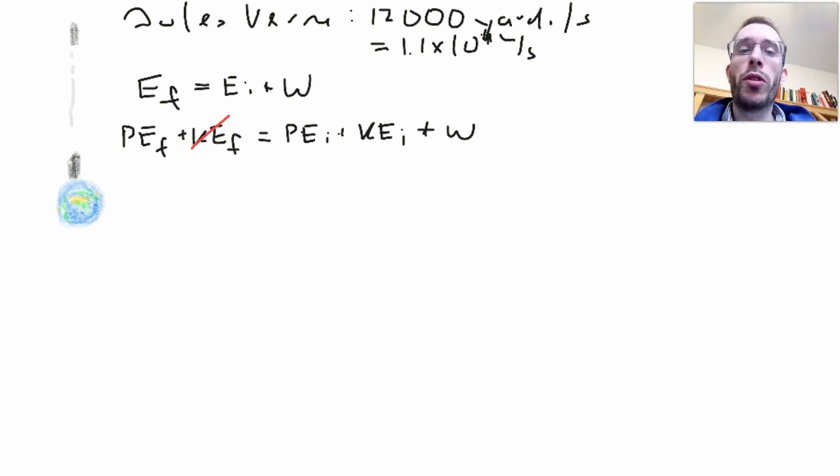Now we have one problem for the potential energy of gravity, we cannot use mgh. Why? Because g, the further I go away from the planet, the lower g will be. So definitely the change in potential energy is not mgh.